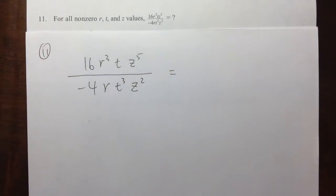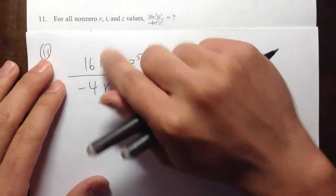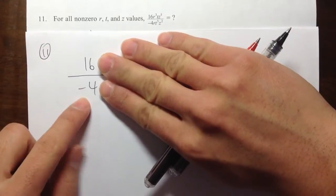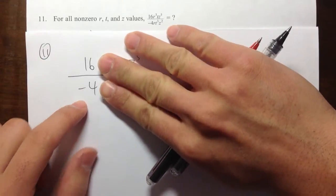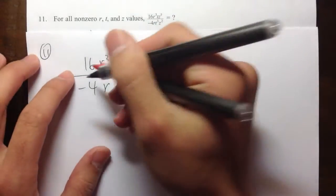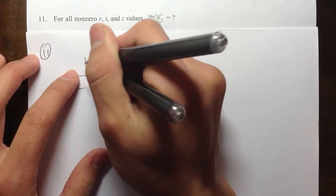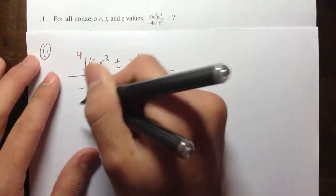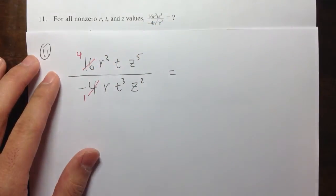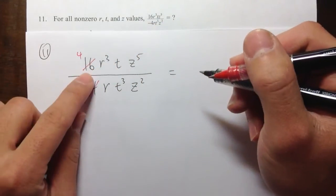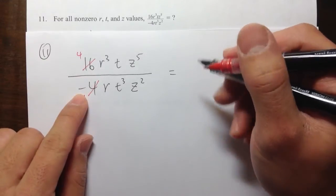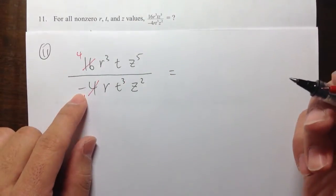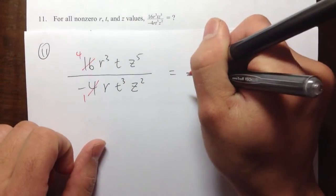So we can just simplify the number first. What I mean by that is just this part, 16 over 4. And they are just like a regular fraction, right? So 16 over 4, we can reduce that. This is going to be 4, because 4 goes into 16 four times, and 4 goes into 4 once. And notice the 16 was positive, and the 4 was negative. So the result is going to be negative, right?